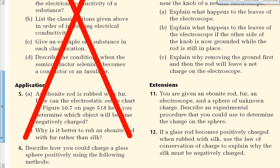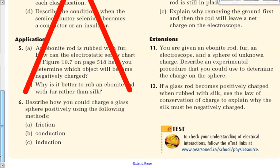Number 6: Describe how you could charge a glass sphere positively using the following methods — by friction, by conduction, and by induction. Let's do conduction and induction first; they're probably a little bit easier. How could you charge an object positively by conduction? Remember that charging by contact we sometimes refer to as conduction, even though it's really a subcategory of conduction.